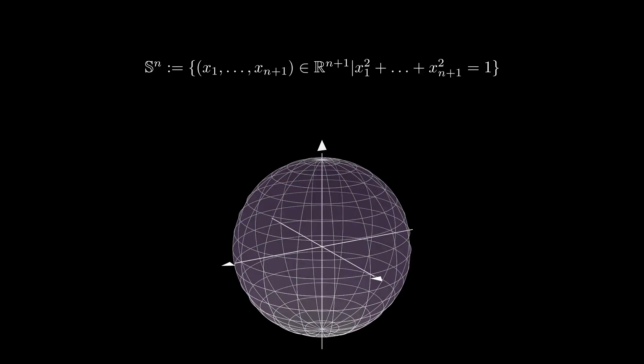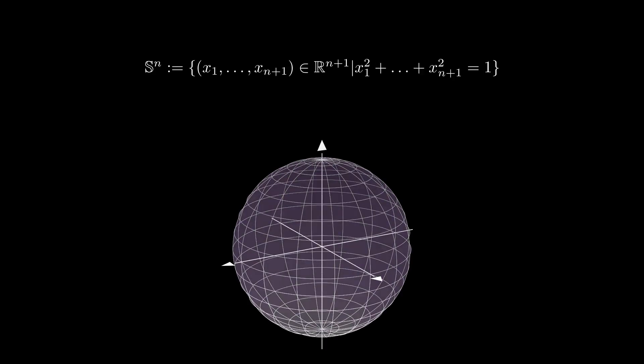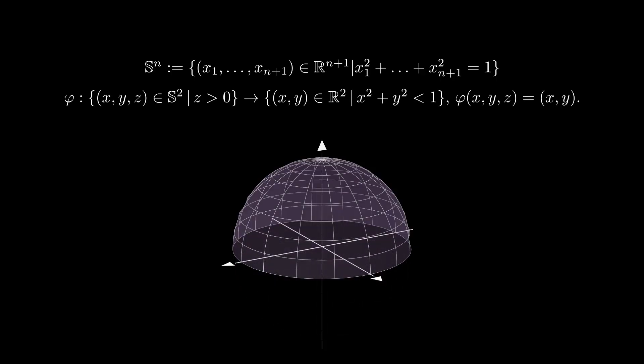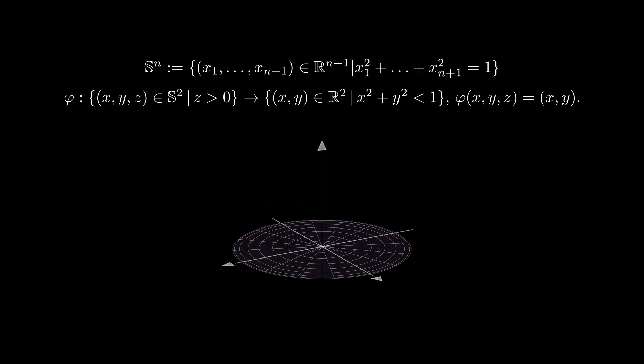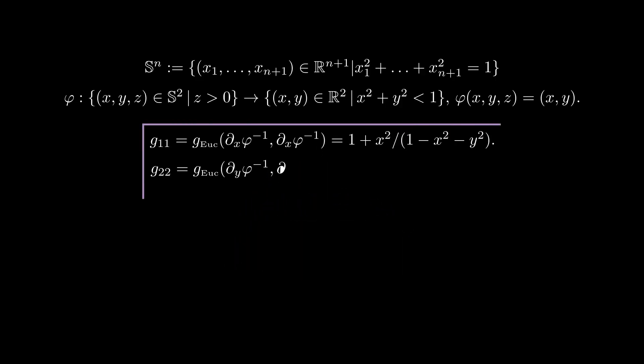The n-dimensional unit sphere consists of the vectors of length 1 in R^{n+1}. In the last lesson, we computed for the two sphere in R^3, the metric coefficients with respect to the chart given by pushing the upper hemisphere down to the unit ball in R^2, which we identified with the xy-plane.